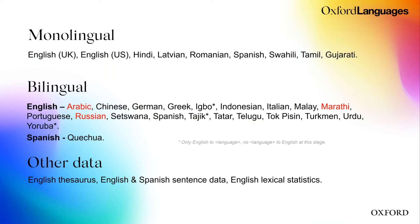We also have other data: a thesaurus — currently an English thesaurus — and we're expanding. We have a US thesaurus on the roadmap and plan to add new languages going forward. We also have a sentence dictionary, which is particularly useful for people wanting to create datasets of parallel sentences, and English lexical statistics derived from one of our corpora that we use to monitor how language changes.